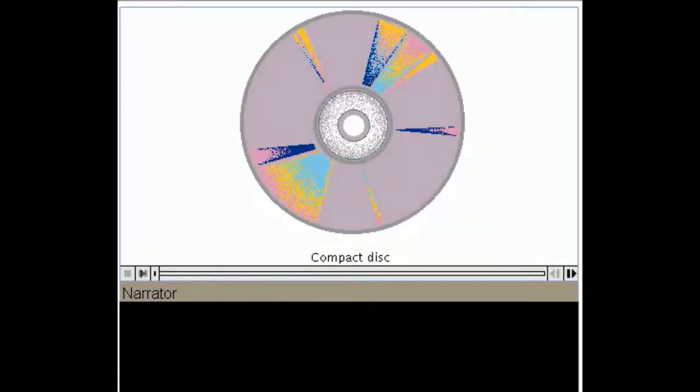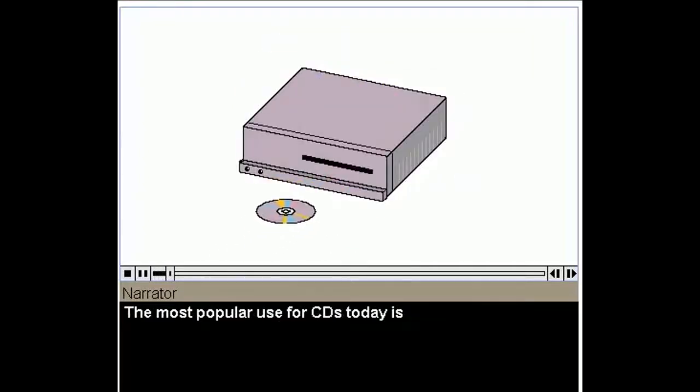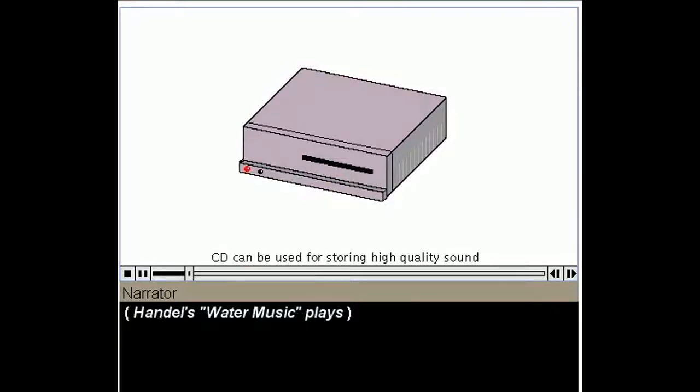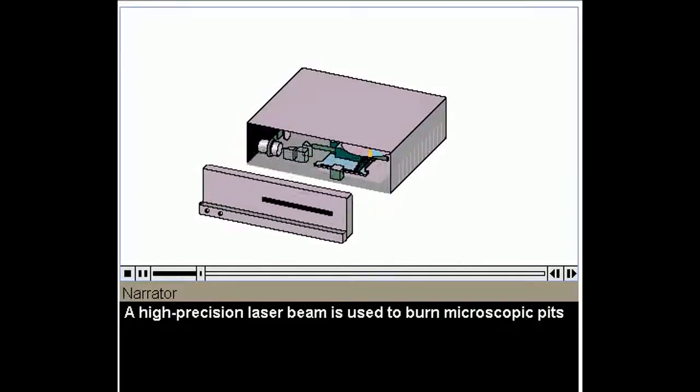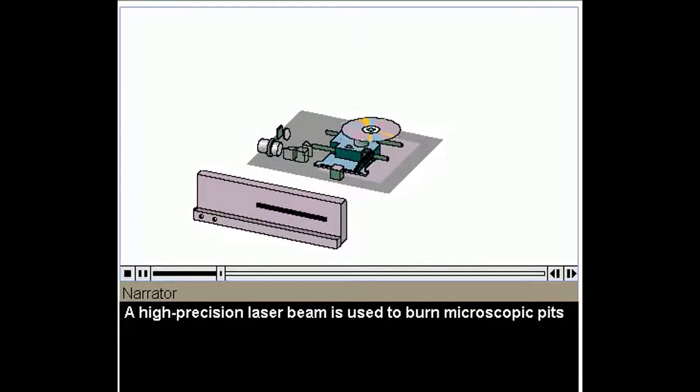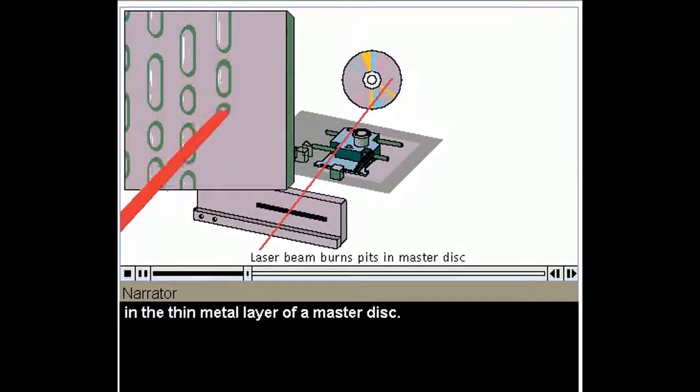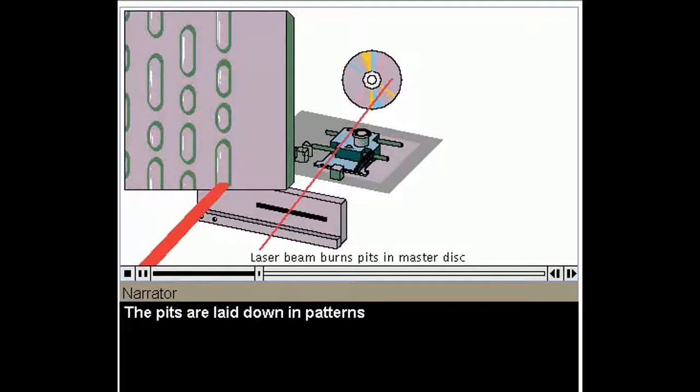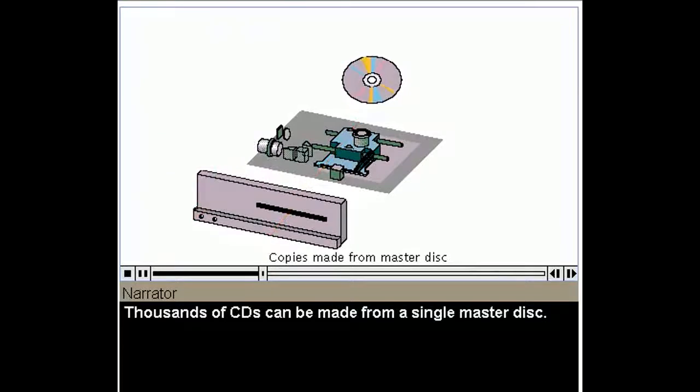A compact disc or CD is a plastic disc containing a thin metallic layer that's used for storing large amounts of information. The most popular use for CDs today is for recording and playing back high quality sound. A high-precision laser beam is used to burn microscopic pits in the thin metal layer of a master disc. The pits are laid down in patterns that can be read by a compact disc player. Thousands of CDs can be made from a single master disc.